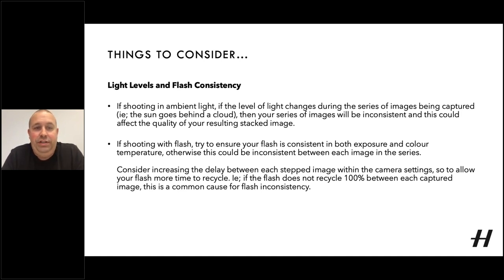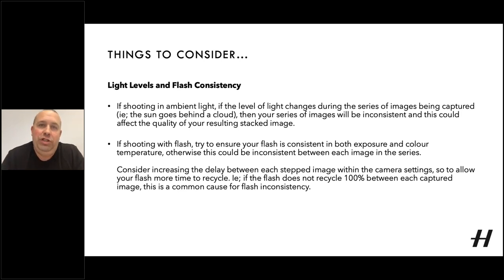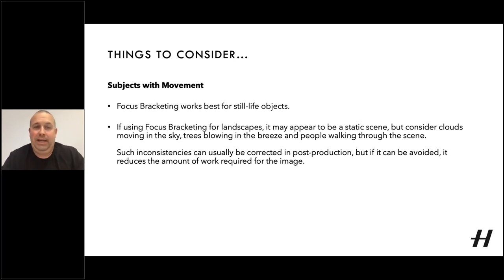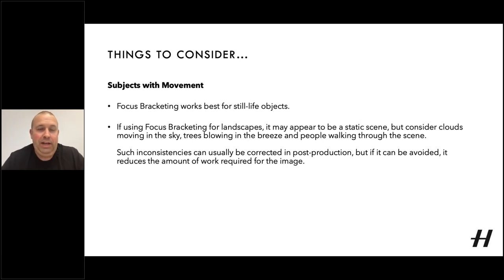If flash consistency is a problem, you can consider increasing the delay between each stepped image within the camera settings, as flash inconsistency is normally caused by the capacitors in the flash not fully recharging in time for the next flash. Increasing the delay helps the flash to fully recharge before it takes the next exposure. Also, subjects with movement are quite hard with focus bracketing. Even when using focus bracketing for landscapes, consider that clouds move in the sky and trees blow in the wind and people may walk through the scene. Such inconsistencies can be corrected in post-production, but if it can be avoided, this helps reduce the amount of work required.